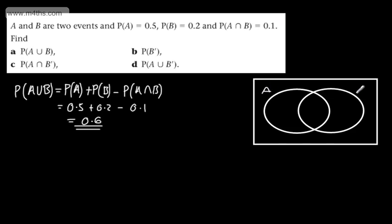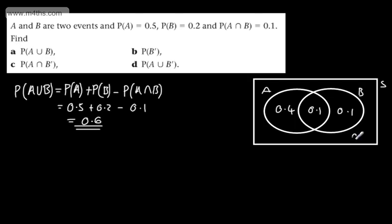Alternatively, using a Venn diagram with A, B and the sample space: the intersection is 0.1. Since P(A) is 0.5, just A only is 0.4. Since P(B) is 0.2, B only is 0.1. That gives a union of 0.6, so the outside is 1 minus 0.6 equals 0.4. The probability of A union B is simply all values inside the circles — confirming 0.6.